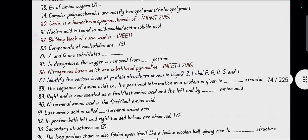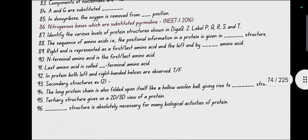Nucleic acid is found in acid insoluble pool. Building block of nucleic acid is nucleotides. Components of nucleotides are nitrogenous base, monosaccharide and phosphate. A and G are substituted purines. Nitrogenous bases which are substituted pyrimidines are cytosine, thymine and uracil.